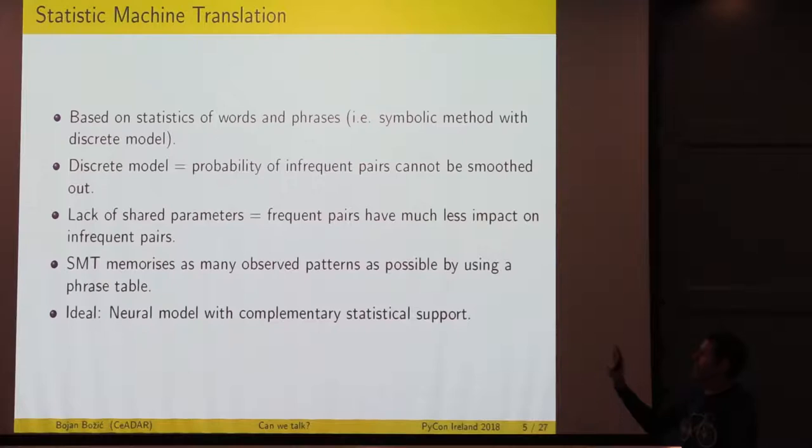These are supposed to be errors due to neural machine translation, or just very bad translation examples. Compared to that, there is the statistic approach, which basically works like a fancy dictionary. You have a list of words to translate directly into each other. The only thing is you have a discrete model using frequencies. There is a lack of shared parameters, meaning frequent pairs and infrequent pairs are both translated with the same function.